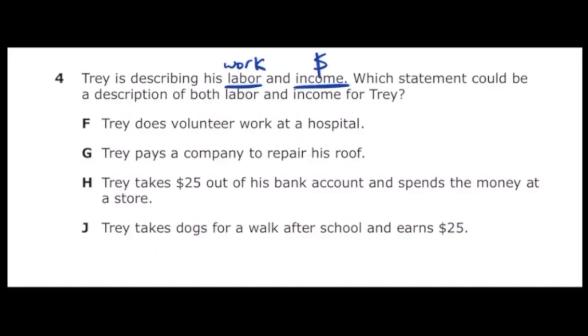Let's go through each answer choice. Letter F says Trey does volunteer work at a hospital. So he is working for that hospital but he's not making money, so letter F is incorrect. Letter G says Trey pays a company to repair his roof. He's paying money out of his own pocket, so technically that's not income. G is not correct.